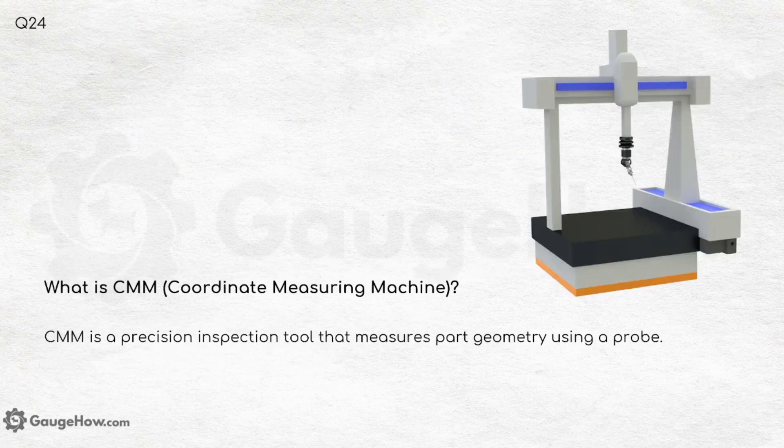What is CMM — Coordinate Measuring Machine? CMM is a precision inspection tool that measures part geometry using a probe, as shown in the figure.